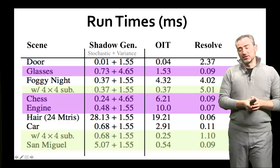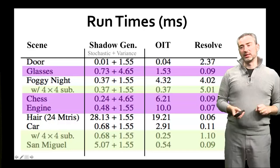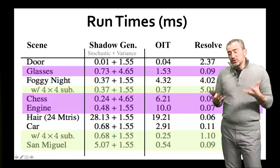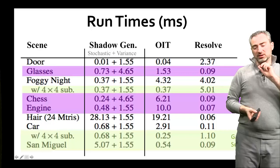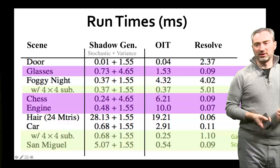In general, our runtimes at 1080p on a GeForce 980 are down to a few milliseconds for all transparent rendering and the resolve. The one very expensive scene is the hair scene — a research scene with 24 million separate hairs — which takes a lot of GPU time just to submit the work, so the OIT pass ends up taking a disproportionate amount of time.